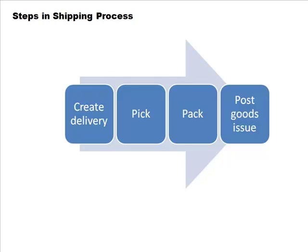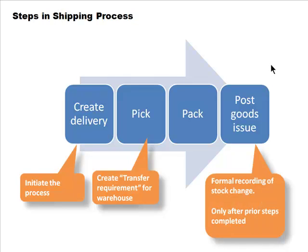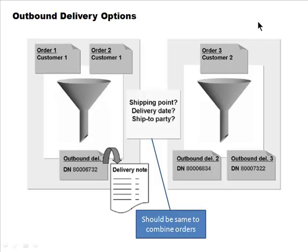After picking, materials are packed and then a post goods issue is performed — the last step in the shipment process. The outbound delivery initiates the process, warehouse management handles picking, then packing prepares the material for shipment, and finally post goods issue formally records the stock change.